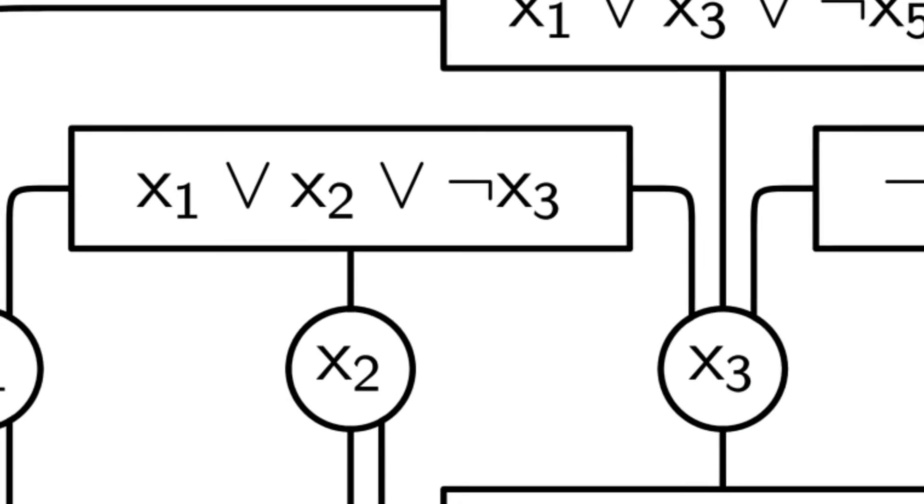But unfortunately, even the simplest version of this question, is it even possible to place dots with separation at least delta and distance to the input graph at most epsilon, already turns out to be NP-hard, as can be seen from this fairly simple reduction from planar 3-SAT.